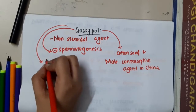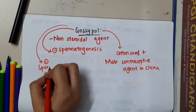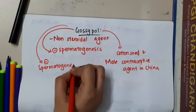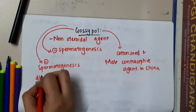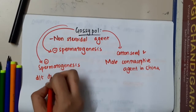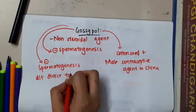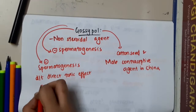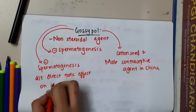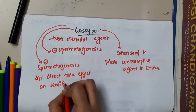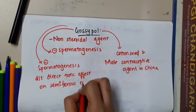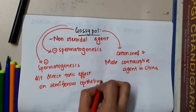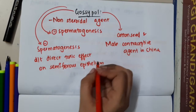Gossypol will inhibit spermatogenesis. Why does it inhibit spermatogenesis? It inhibits spermatogenesis due to the direct toxic effect on seminiferous epithelium.